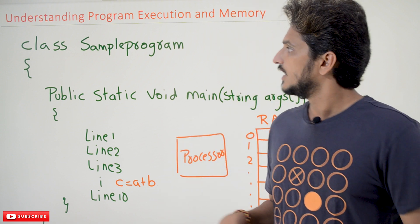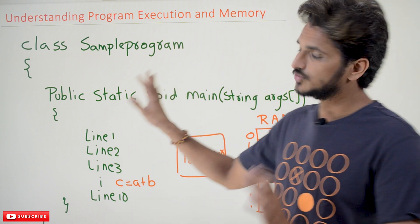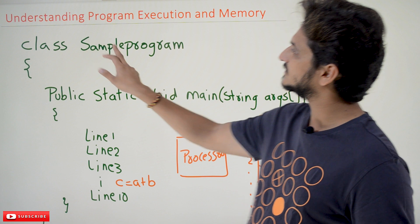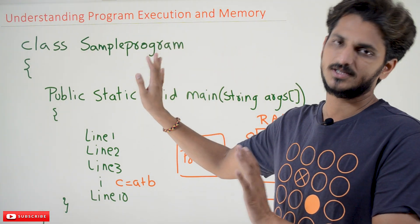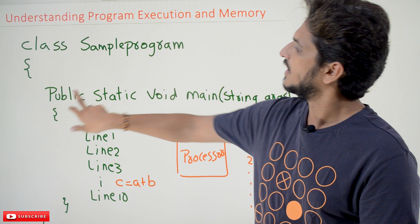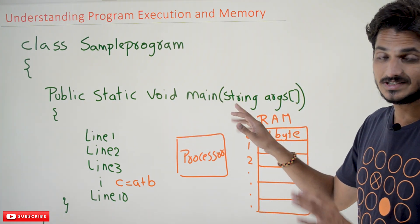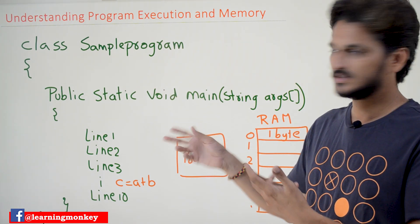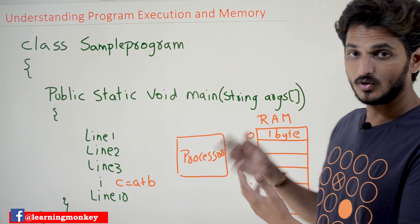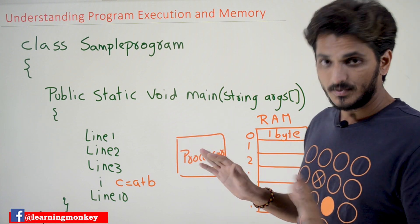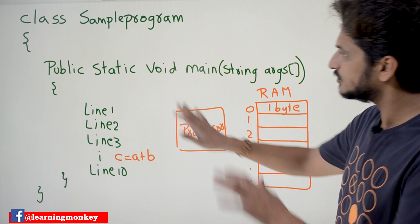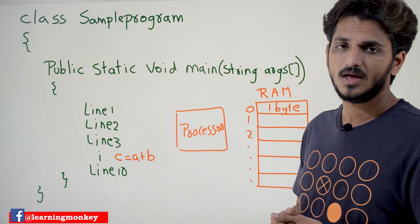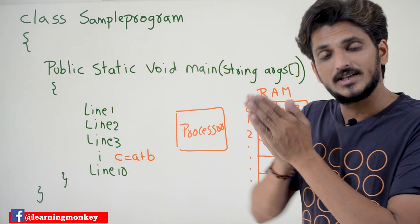Coming to today's class, in our last class we clearly showed the execution of a simple Java program — the Hello World program. There we mentioned the class sample program, which we are going to understand in our next classes. Similarly, public static void main — this is a main method. What is public static void and string args, we are going to discuss in our next classes. Now, whenever you start executing this program, when you run this program, from where does the program start its execution?